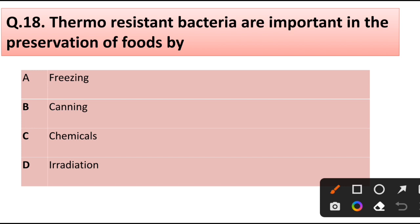Question number 18. Thermoresistant bacteria are important in the preservation of foods by: freezing, canning, chemicals, or irradiation. Correct answer is option B, canning.